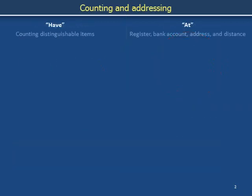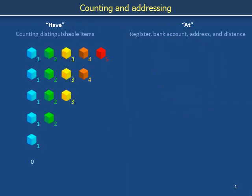In kindergarten, we were introduced to the idea that numbers mean how many things you have. Do you have nothing? Do you have items 1, 2, and 3? Or, for example, do you have items 1, 2, 3, 4, and 5? We distinguish these conditions using a number line.